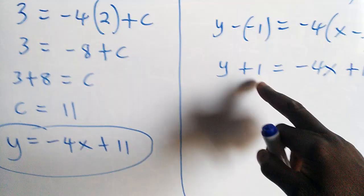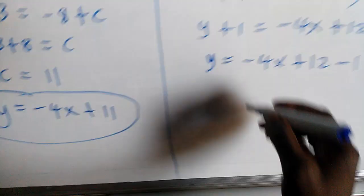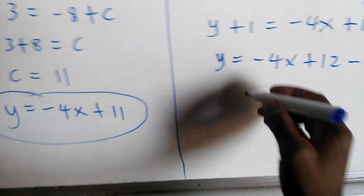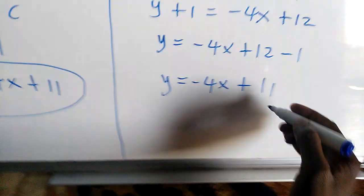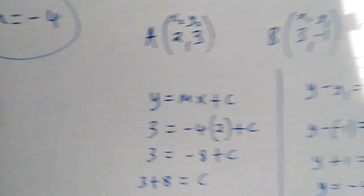Therefore, we'll have negative 4x plus 12. Once the 1 crosses the equal sign, it's going to give us a negative. Therefore, y equal to negative 4x plus 12 take away 1, which is 11. Look at these two. They're giving us the same. They're one and the same.